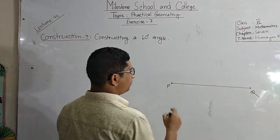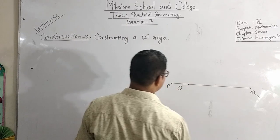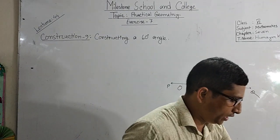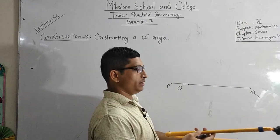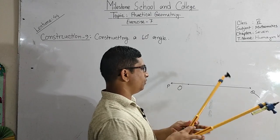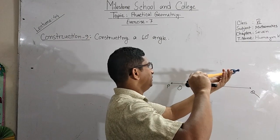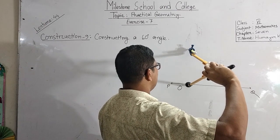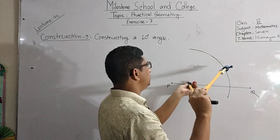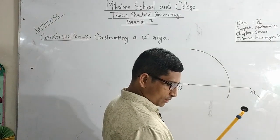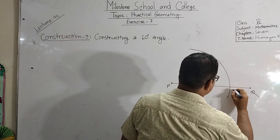This line is PQ. Now here on this line mark a point. Suppose this point is O. Taking the suitable radius with O as a center, here we will draw one arc. Suppose this arc intersects at point A.